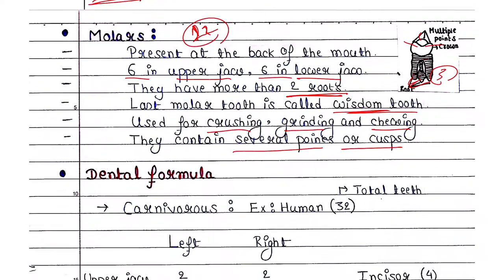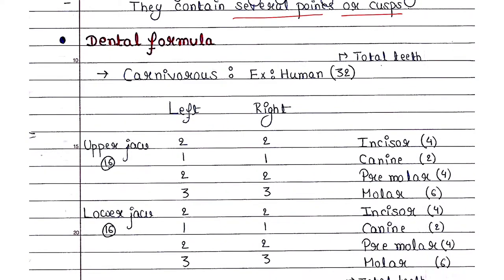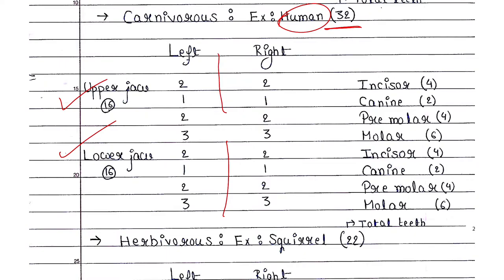Next we will talk about the dental formula — how the teeth are arranged. For example, take the case of humans. Humans have 32 total teeth. We have an upper jaw and a lower jaw, each divided into left and right parts.